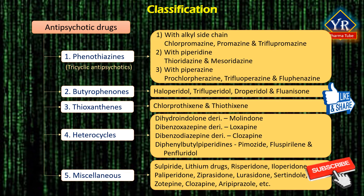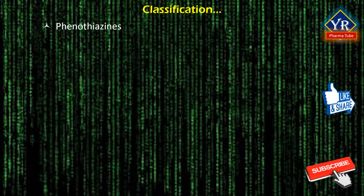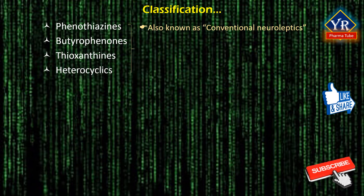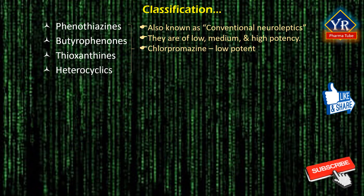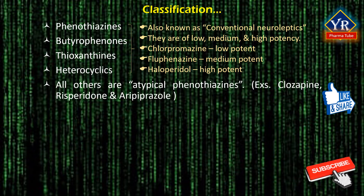From the above classification, phenothiazines, butyrophenones, thiothixines, and other heterocyclic compounds are categorized as conventional neuroleptics. They are classified as low, medium, and high potency. The prototype for low potency neuroleptics is chlorpromazine, medium potency is fluphenazine, and high potency is haloperidol. All other types of neuroleptics are categorized as atypical. Clozapine, risperidone, and aripiprazole are examples of atypical neuroleptics.